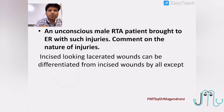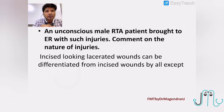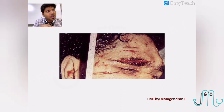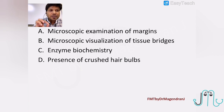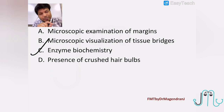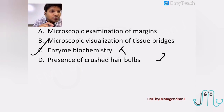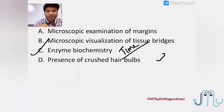An unconscious male RTA patient is brought to the ER. Incised-looking lacerated wounds can be differentiated from incised wounds by all except — how will you differentiate a split laceration from an incision? Microscopic examination of margins is useful; microscopic visualization of tissue is also useful. Enzyme biochemistry and histochemistry are useful for determining time since injury, not for whether it is a laceration or incision. Presence of crushed tissue bridges is seen only with laceration, not with incision.